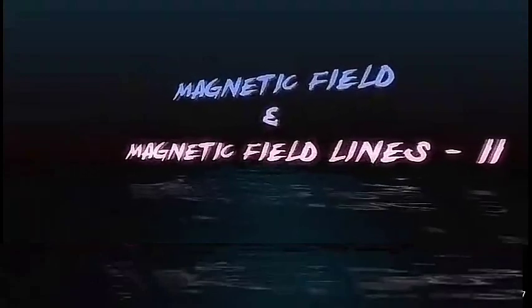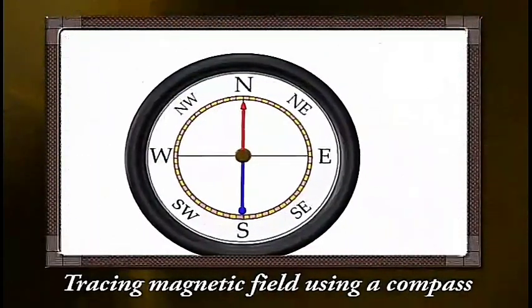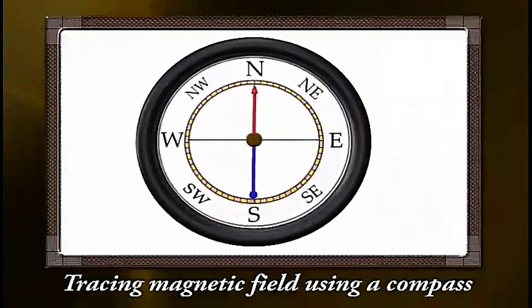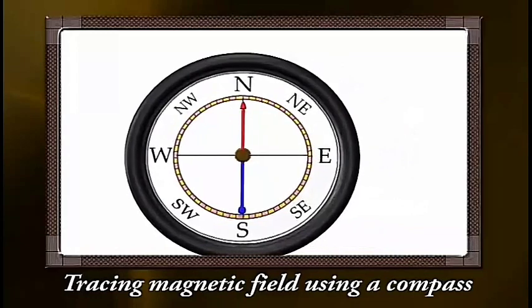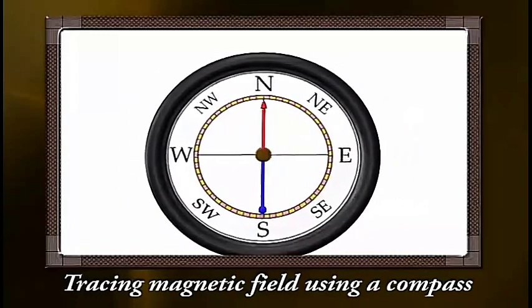Magnetic field and magnetic field lines. You would be amazed to know that the magnetic field around a magnet can also be traced using a compass. Let us see how.